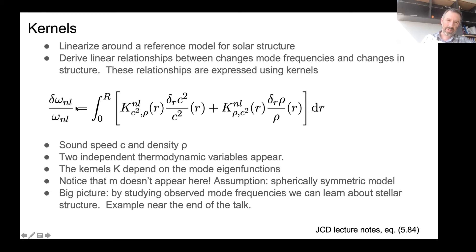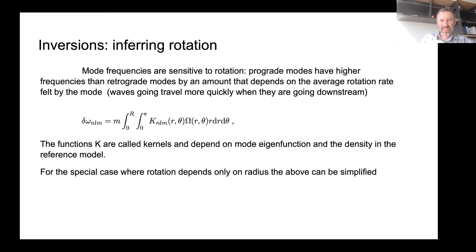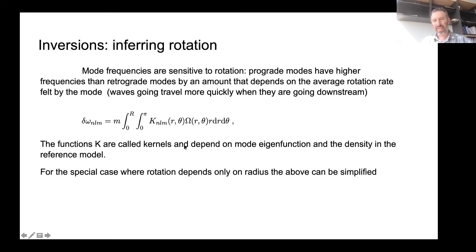There's no M in the structure equations — the assumption is that we're in a spherically symmetric star, and mode frequencies in that case don't depend on M. For rotation, you can do a similar thing and work out kernel functions K that depend on N, L, and M, connecting the rotation rate as a function of radius and latitude with changes in mode frequencies. Again, these kernel functions K depend on the mode eigenfunctions and the density of the reference model.